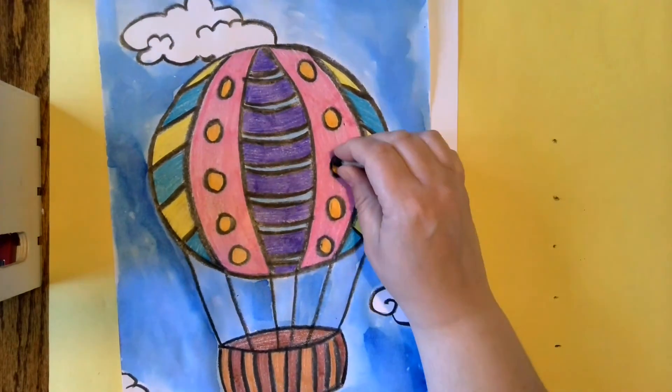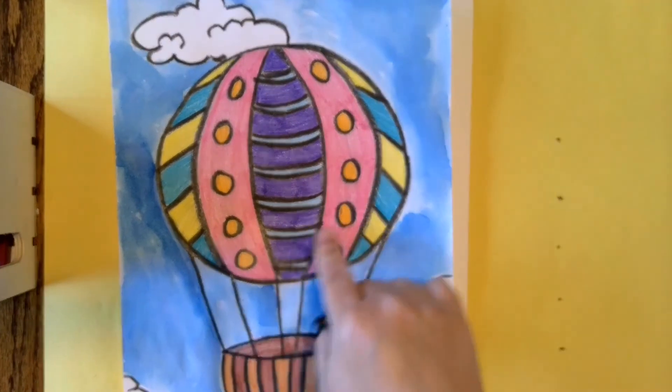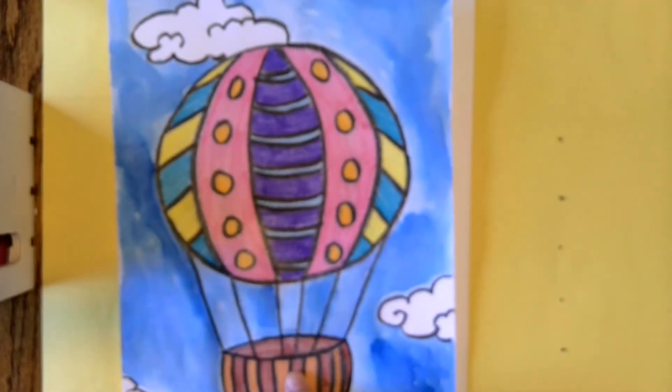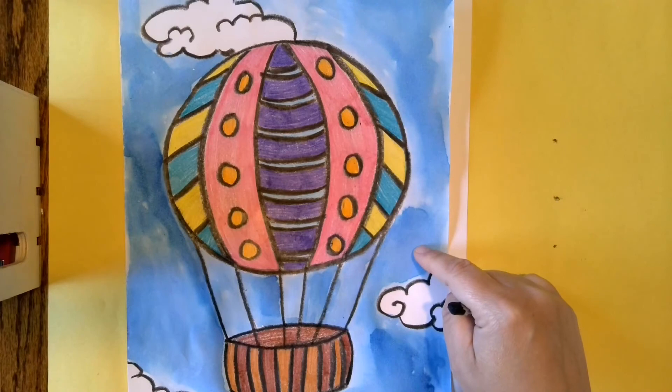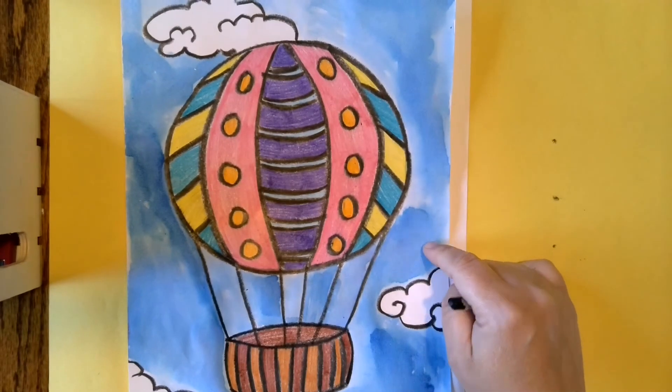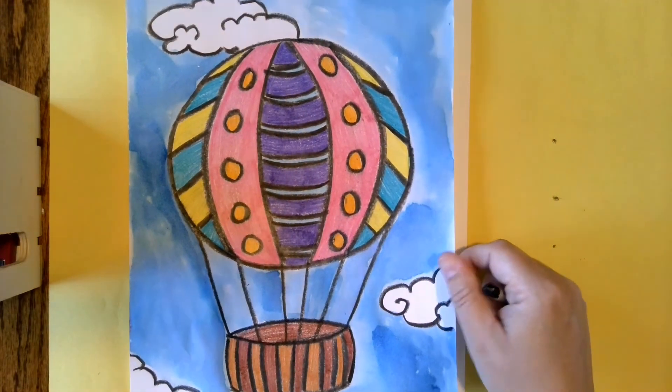I drew with pencil first, and then I traced over my design, pushing hard, and then I colored all of this in with crayon, except for the background I did with watercolor. Now if you have watercolors at home, and you want to do watercolors for your background, you can. If you don't have watercolors, that's okay. You can use crayons for that part, too.